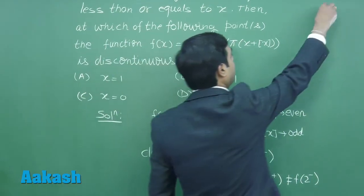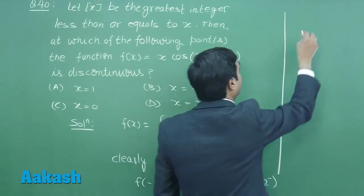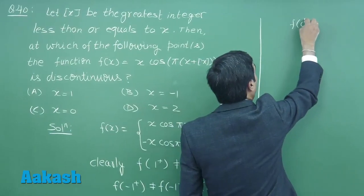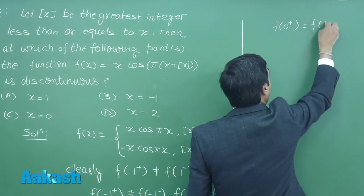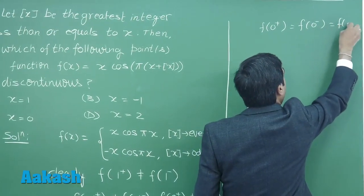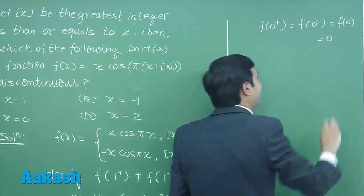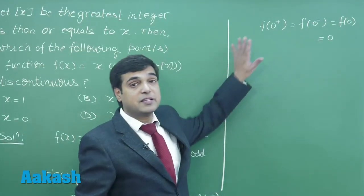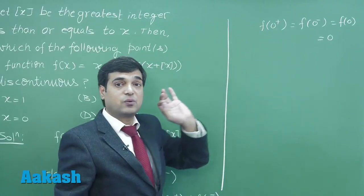We can clearly see here f of zero plus or zero minus or zero, all will become value as zero. That means this function becomes continuous at x equals zero.